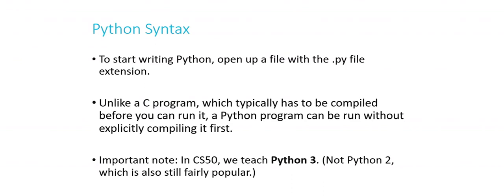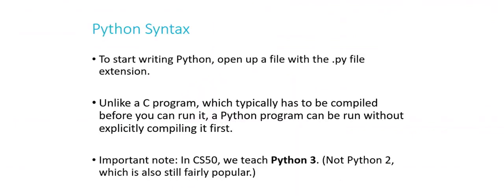Unlike C, Python is not necessarily a compiled language. Python programs can be run in a Python interpreter — similar to PHP — where you can just write your lines of code and have the computer run through them one by one. One important caveat: in CS50 we teach Python 3. There are two popular versions, Python 2 and Python 3, and all the syntax we'll cover is Python 3 specific. When looking up documentation, be sure to include Python 3 in your search, because you might get Python 2 results, which would not necessarily work.